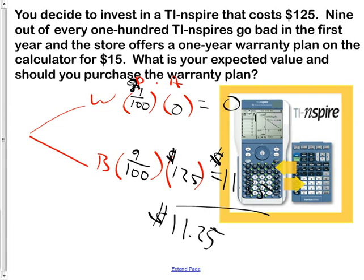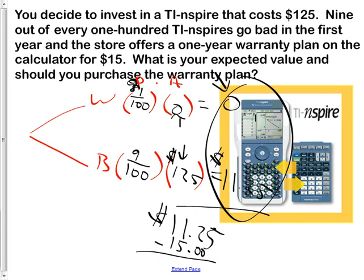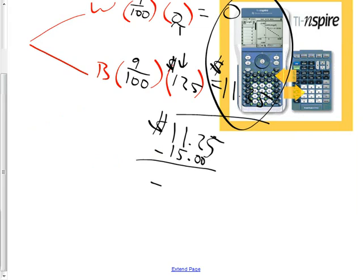Because now I have to factor in how much does this thing actually cost? That's what a warranty would be worth. Some people put in negative 15 here and subtract 15 there, but they've got to do it twice. I like to factor in the $15 at the very end. So now I'm going to subtract off the $15 that I paid for it, and I will realize that I have a negative expected value of negative $3.75. That means my expected value, if I buy the warranty, I will expect to lose on average $3.75. What does that mean about the store? They're going to make $3.75.